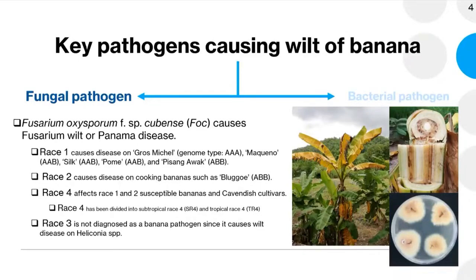Wilt symptoms of banana can be caused by many factors, for example, unfavorable environment, insect damage to rhizomes, or plant pathogens. However, plant pathogens seem to be the most difficult to control. The fungal pathogen Fusarium oxysporum forma specialis cubense, or FOC, is devastating banana in many countries, especially tropical and subtropical areas including Thailand.